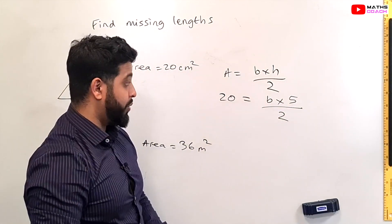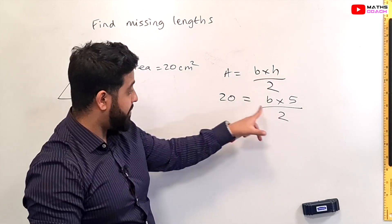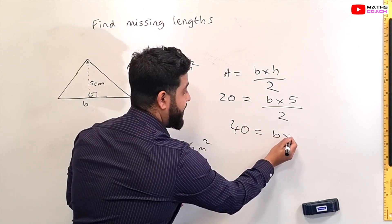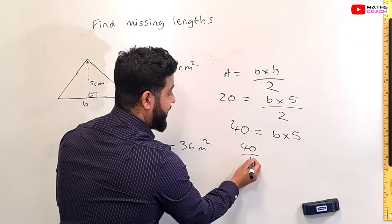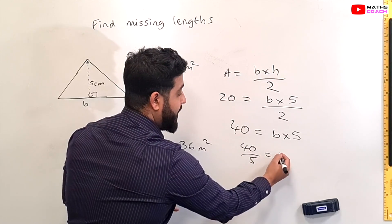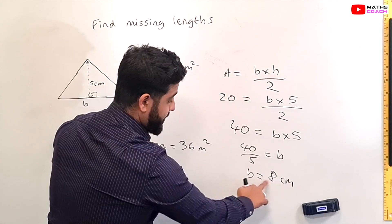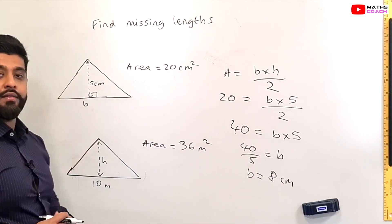Now all we will do is work backwards. So we'll solve this by multiplying by 2 over here. So that gives us 40 is equal to b times 5 and b can be obtained by doing 40 divided by 5 which is the opposite of multiplying. So that will give us b as 8 centimeters. The base is 8 centimeters so over here this length here is 8 centimeters.